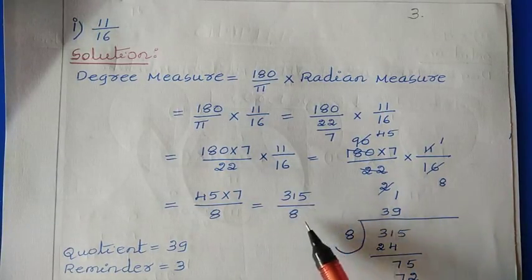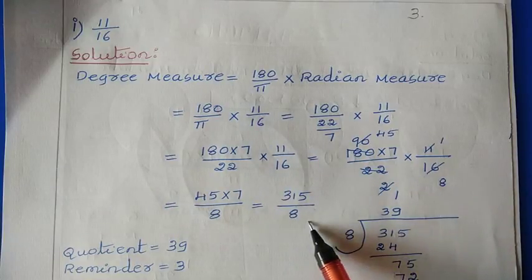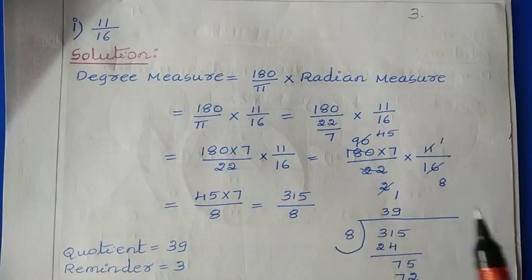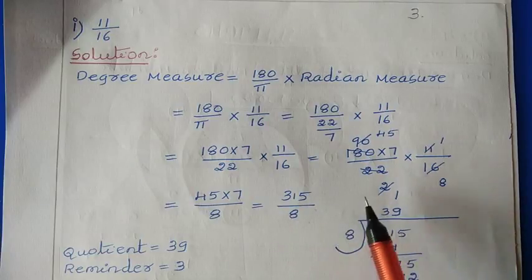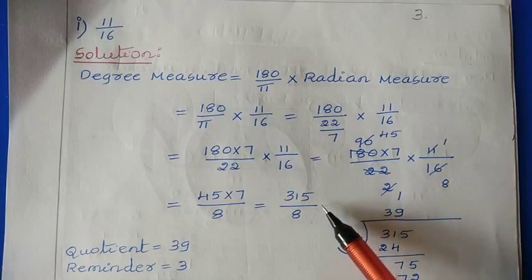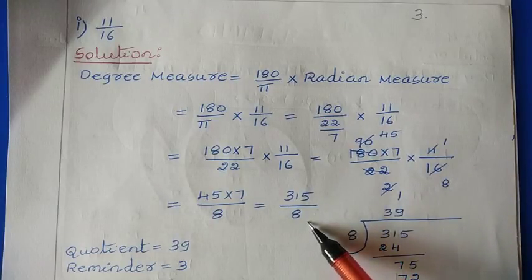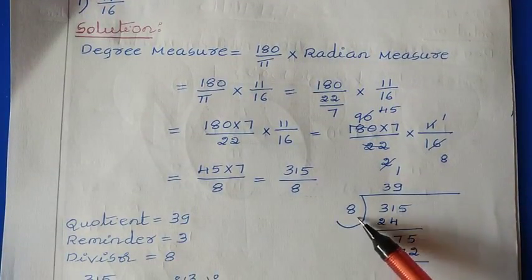So the final answer is 45 × 7 divided by 8, which equals 315/8. Here we got the answer in degree measure, but this is not in proper form. Degree measure needs to be written in degrees, minutes, and seconds — whereas here we just have a fraction value. So first of all you need to perform the division: divide 315 by 8.